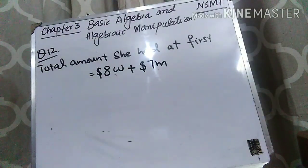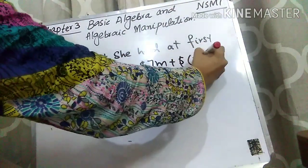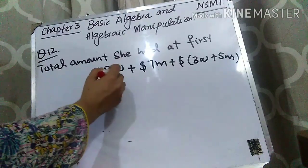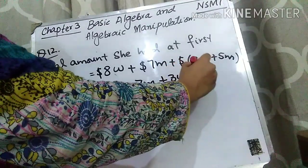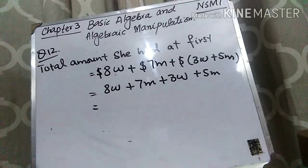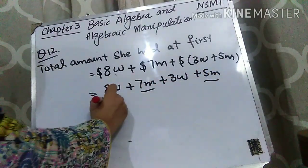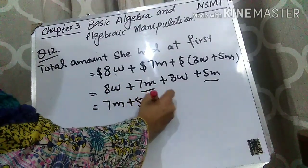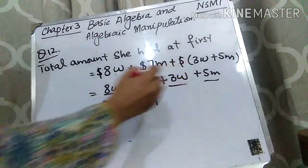Now I write the amount she has left, which is 3W plus 5M. So the total expression is 8W plus 7M plus 3W plus 5M. We group the like terms: 7M and 5M are like terms, and 8W and 3W are like terms. Writing them together: 7M plus 5M, and 8W plus 3W.